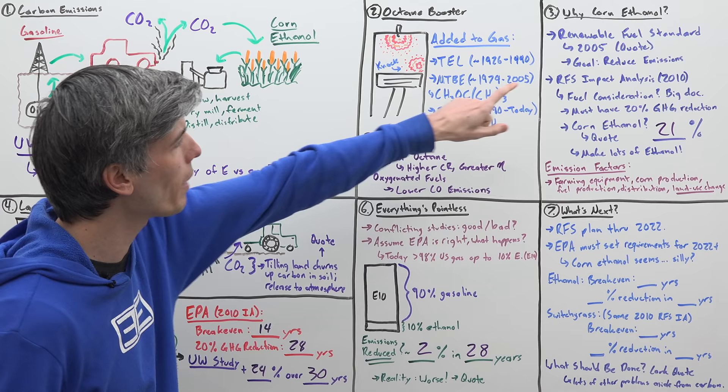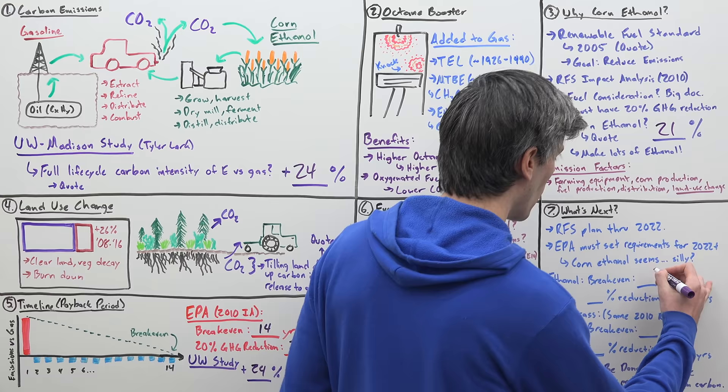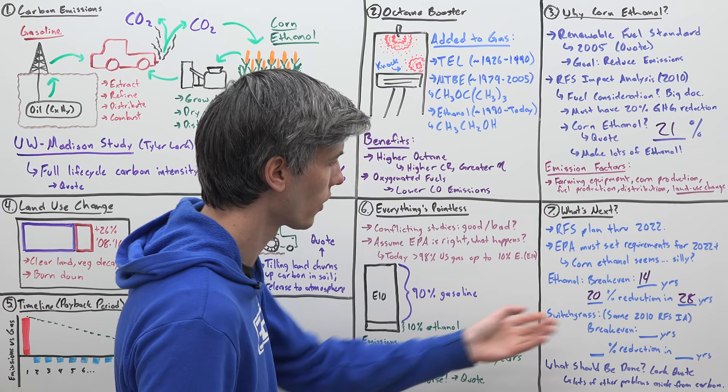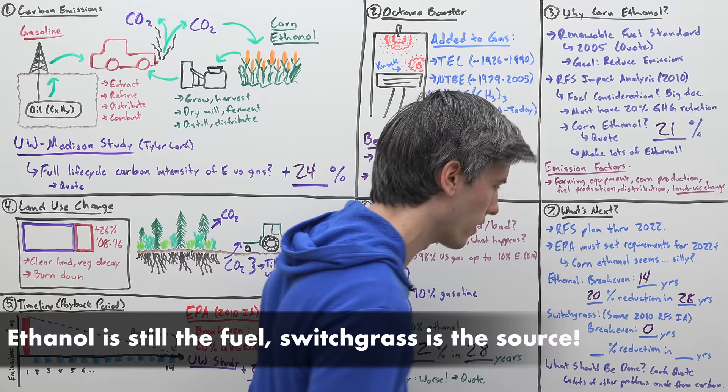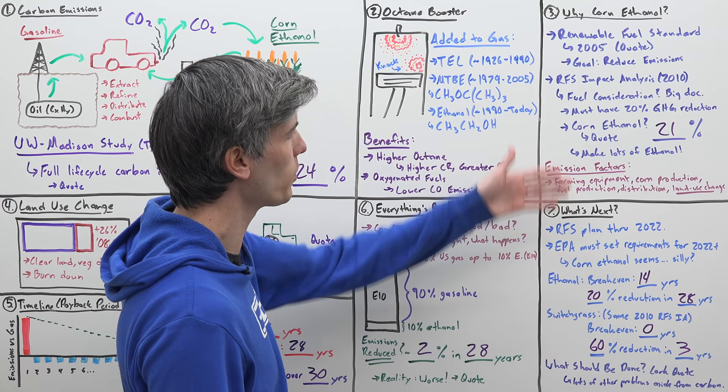And one of the interesting things to me is that if you go back to this renewable fuel standard impact analysis from 2010, you see that the break-even point of ethanol is 14 years and you end up with a 20% reduction in 28 years. We already discussed this, but they looked at another fuel in this impact analysis, switchgrass, and they found that the break-even point was zero years and it resulted in a 60% reduction in emissions in just three years. And so it's like, okay, we have seen that other solutions exist and yet we went with this one that probably doesn't even help us.